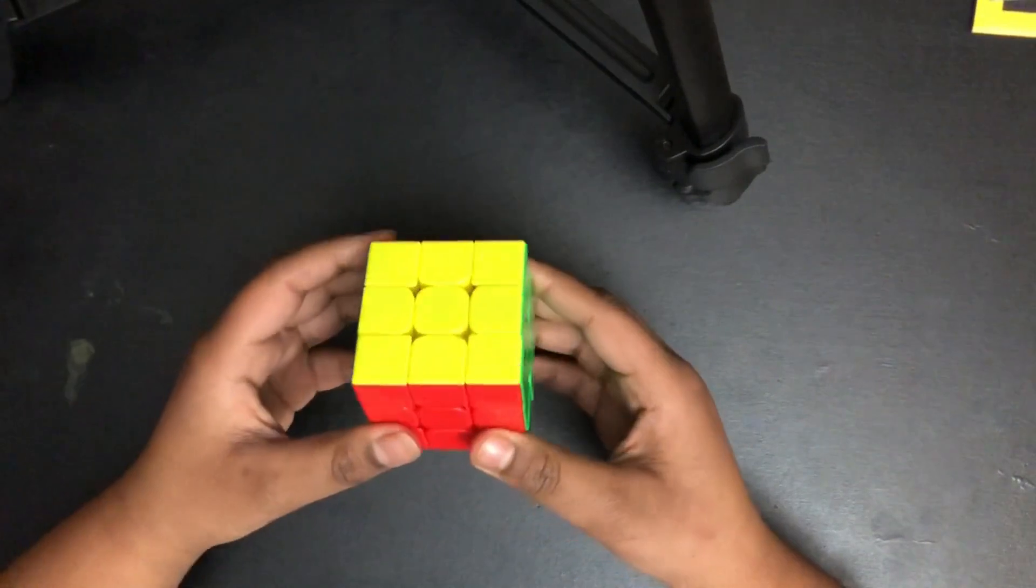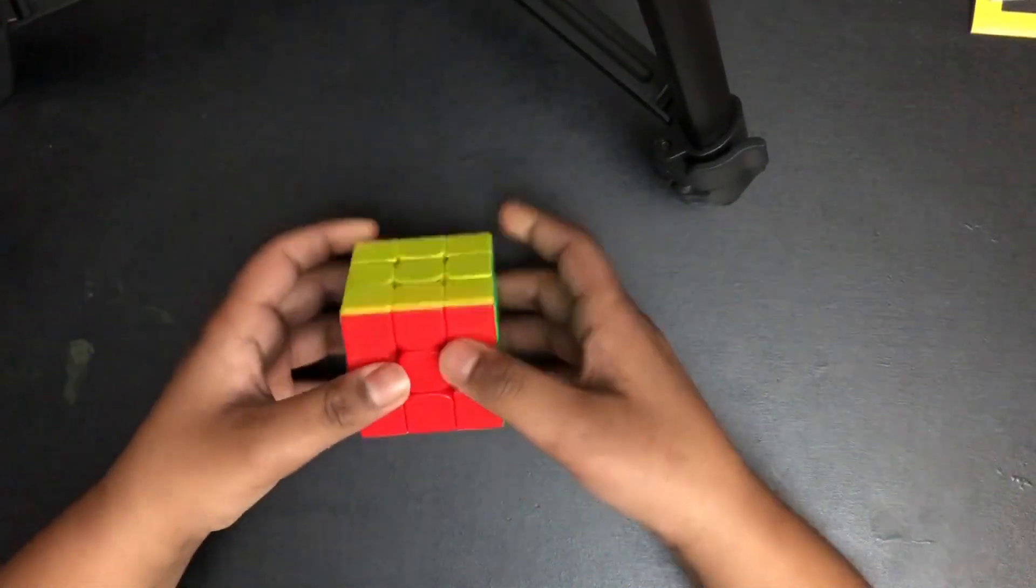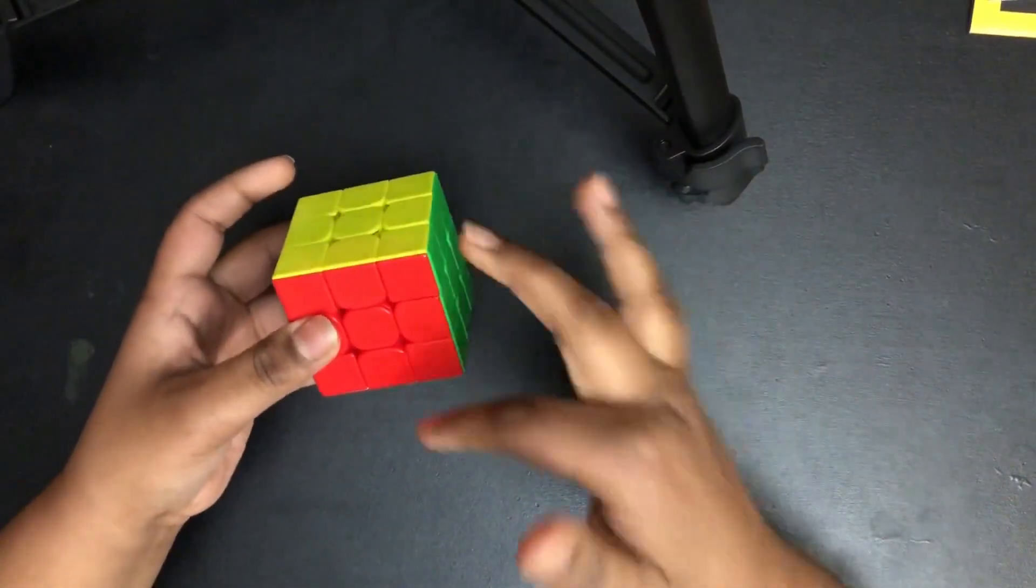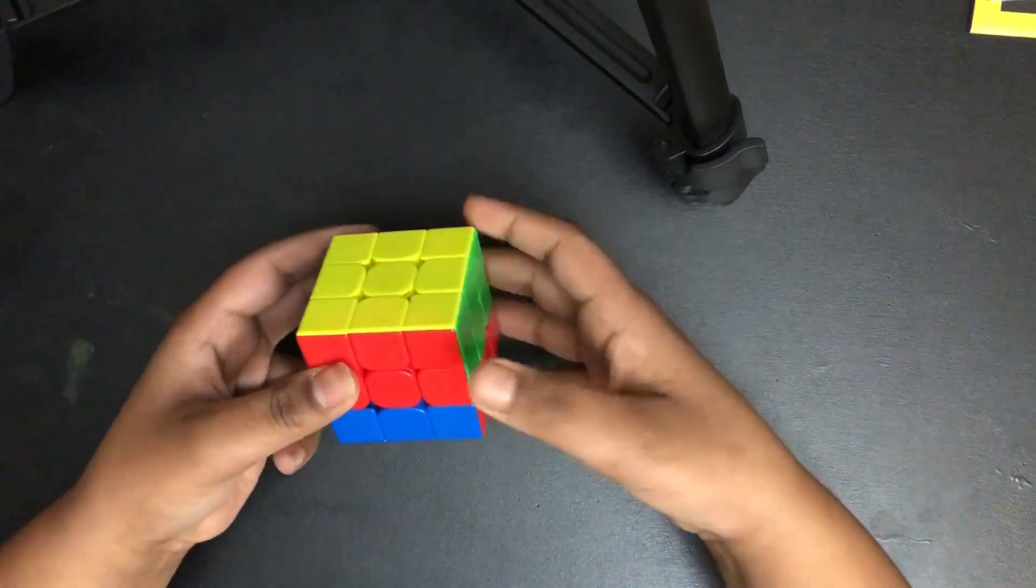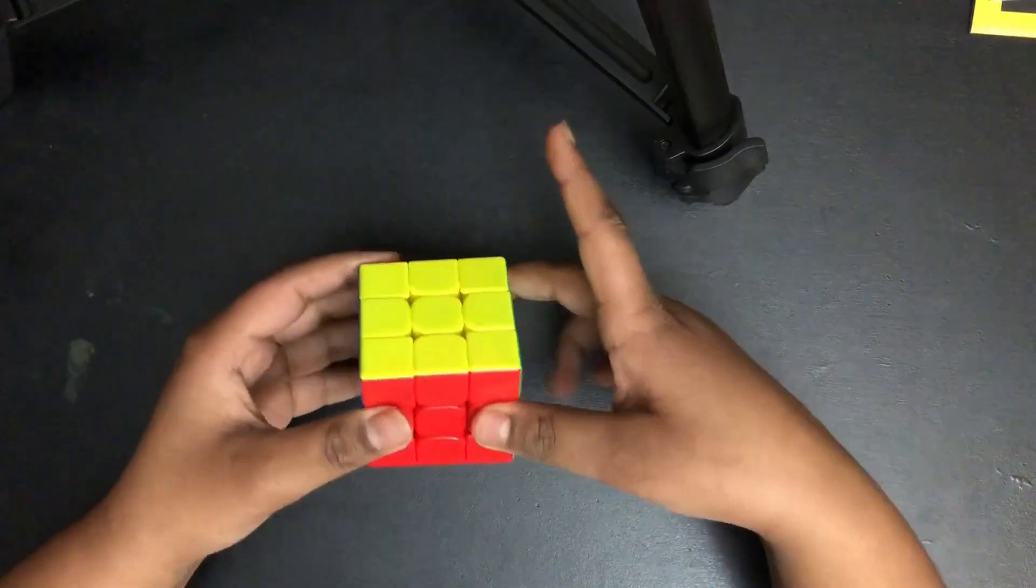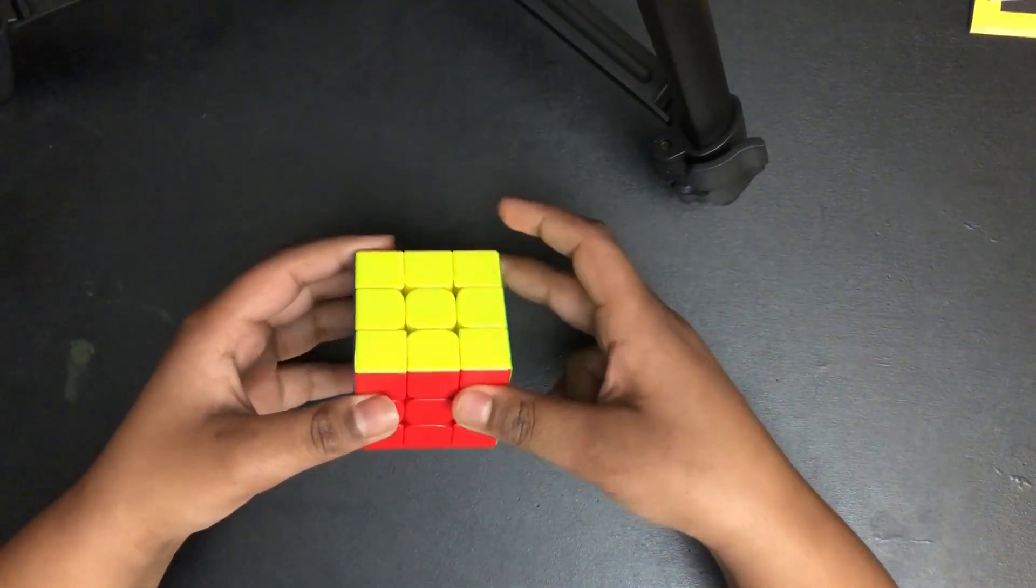And then next is D, the down layer. So this is D and this is D prime. So D, D prime.